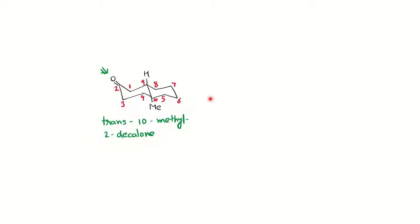Now we will see the decalone example as asked in the question. We have taken trans-10-methyl-2-decalone. Trans-decalone means a 10-membered bicyclohexane ring system where the methyl and hydrogen at the junction are opposite to each other, and the methyl group is at the 10th carbon. The carbonyl group is at position 2. So this is trans-10-methyl-2-decalone.